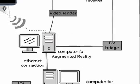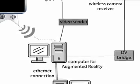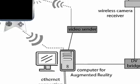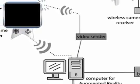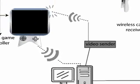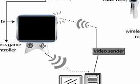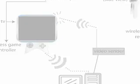Markers are found within the video signal and virtual objects are drawn with respect to their position over the video. The augmented video is then broadcasted over common UHF television frequencies, which are picked up by the LCD TV's built-in tuning or display.